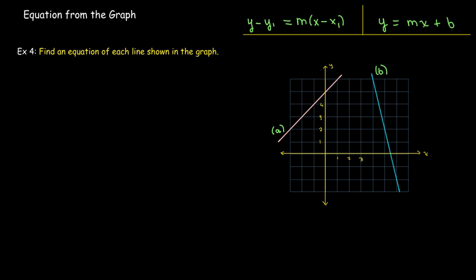I can also find an equation from a graph. Again, what are the things that I need to know? I need to know the slope in any case. And either I need to know a point on the line, or I need to know the y-coordinate of the y-intercept. In my first line, line A here, I actually know the y-intercept is positive 5.